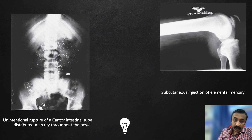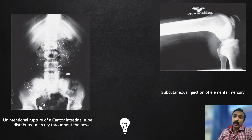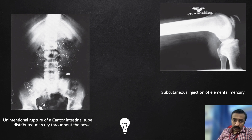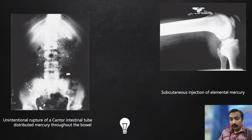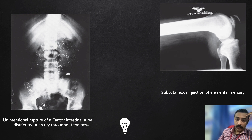What you also see here is a subcutaneous injection of elemental mercury into the subcutaneous plane. Imaging of such cases can in fact help us to plan debridement. So that is with regards to mercury.